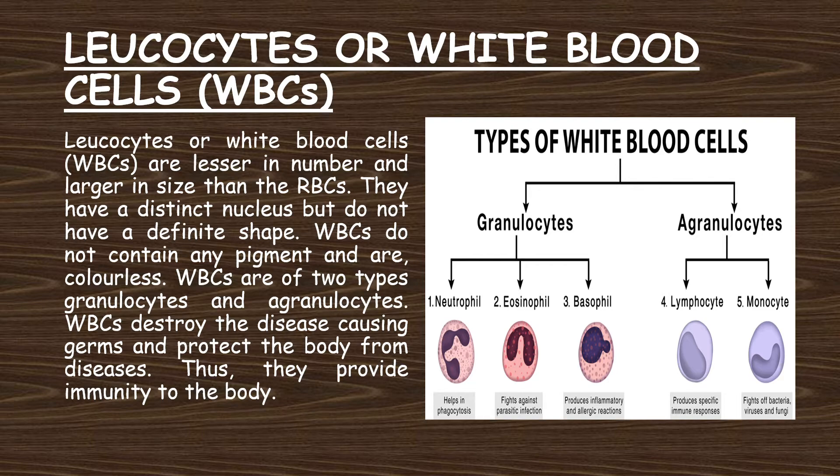Granulocytes are further subdivided into three parts: neutrophil, eosinophil and basophil. Agranulocytes are further subdivided into two parts: lymphocyte and monocyte.